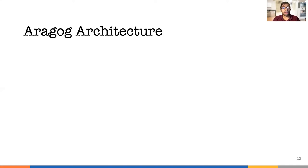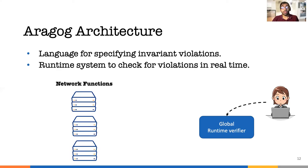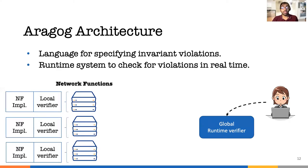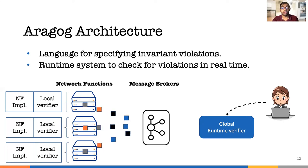With the challenges in mind, I present Aragog's architecture. Aragog has a language that operators use to specify invariants and install them to the logically central runtime verifier. Network functions have a local verifier that checks for local invariants and suppresses messages not needed for the global verifier. The local verifier sends the remaining messages to message brokers that forward the messages to the global verifier to check for distributed invariant violations.